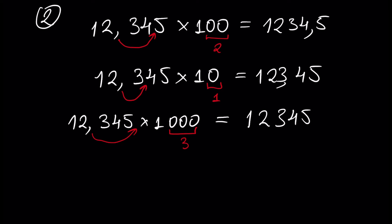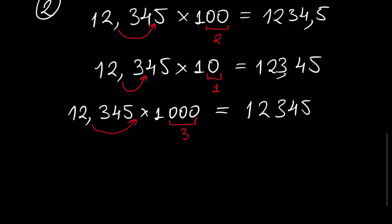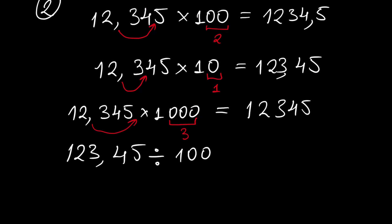Division is the same but we move the floating point not to the right side but to the left side. For example, 123.45 divided by 100: since we have two zeros, we move the floating point two times to the left side, and we have 1.2345.